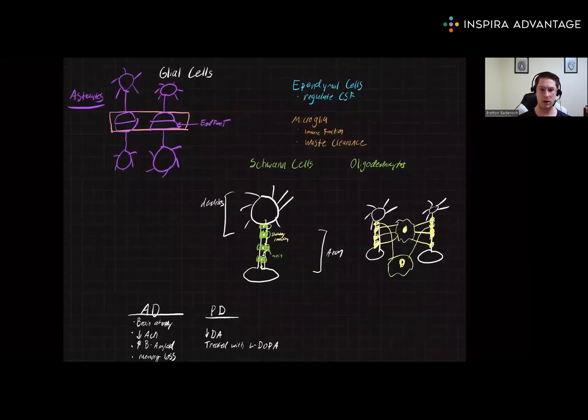In summary, astrocytes help form the blood-brain barrier, ependymal cells regulate CSF levels, microglia fight pathogens and clear waste, Schwann cells myelinate neurons in the peripheral nervous system, and oligodendrocytes myelinate neurons in the central nervous system. Thank you so much for watching our video on glial cells and common neurodegenerative diseases, and I will see you next time.